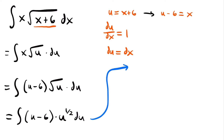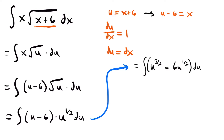Continuing our work, we have the integral of u to the one-half times u. When you multiply two variables, you add their exponents. The exponent of this u is 1 and the exponent of this u is one-half, so 1 plus one-half is three-halves — giving us u to the three-halves power. Then we subtract u to the one-half power times 6, which is 6 times u to the one-half power, all multiplied by du.